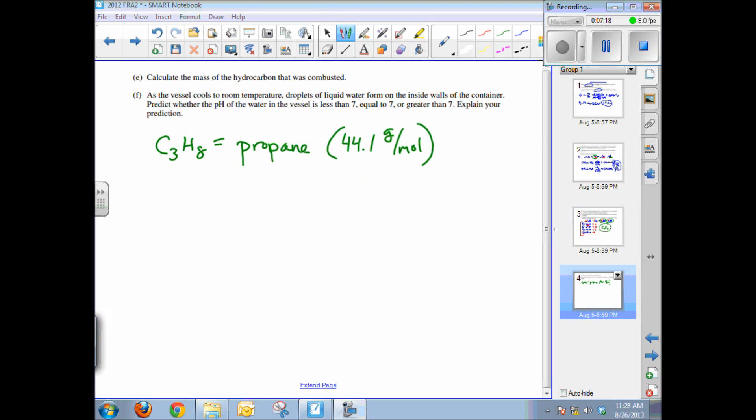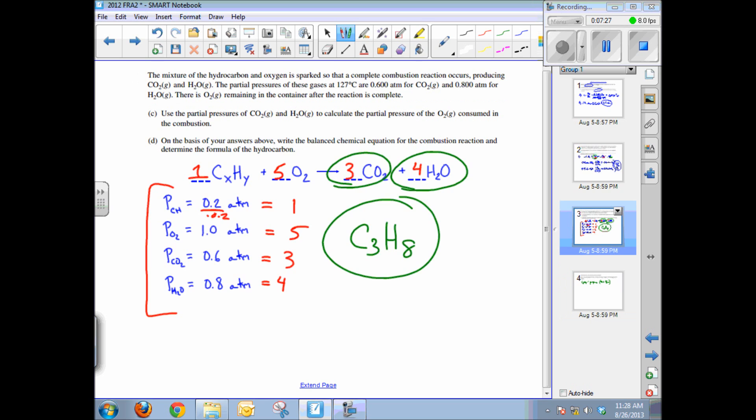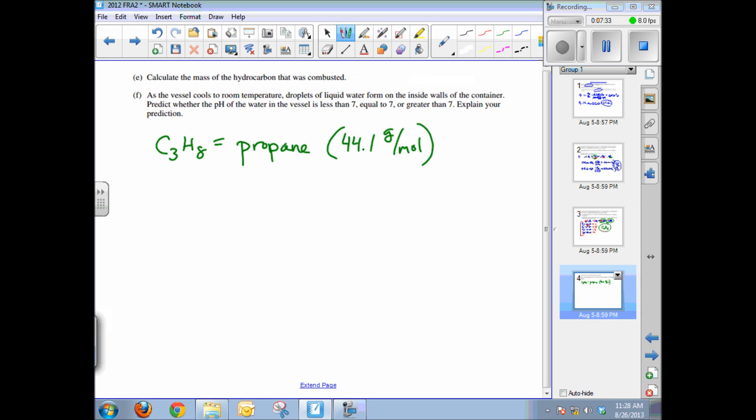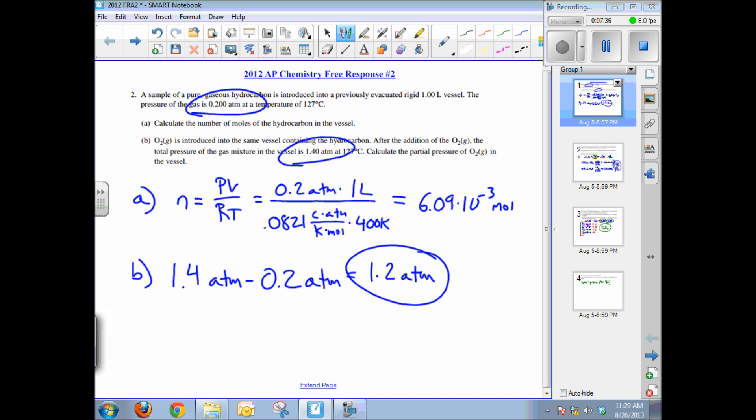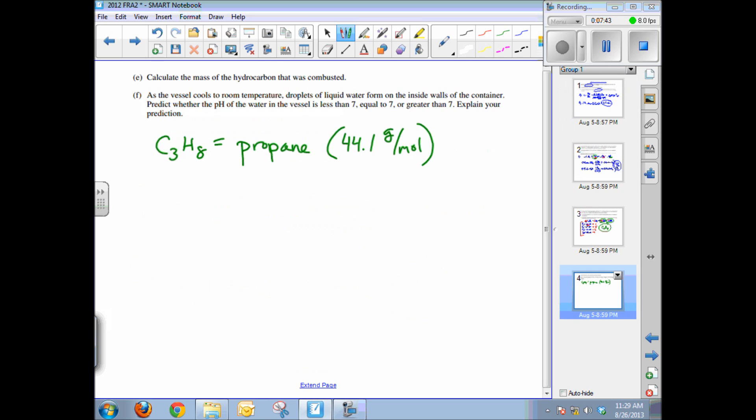Part E of this question asks you to calculate the mass of initial hydrocarbon that was combusted. So from the previous question, we know that the empirical formula of the hydrocarbon was C3H8, and that's propane. So we can get to a molar mass. And from the initial part A of the question, we calculated the number of moles, which was 6.09 times 10 to the negative 3 moles. So all we need to do is take 6.09 times 10 to the negative 3 moles and multiply it by the molar mass times 44.1 grams per mole. And you'll be left with the number of grams. Moles will cross out and you get 2.69 grams of propane that was combusted.